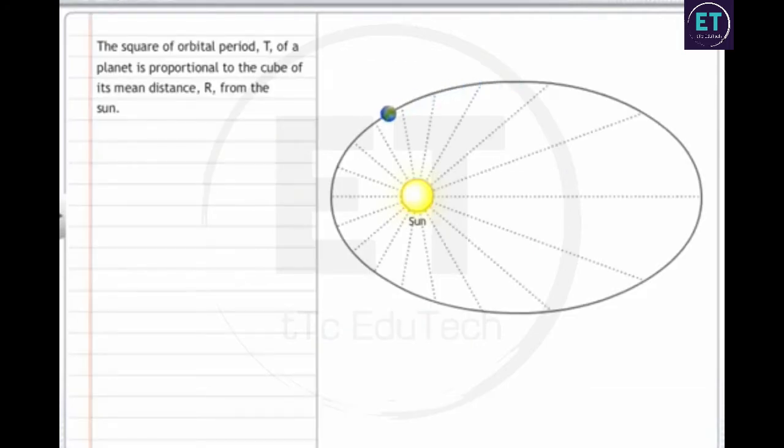The law of periods states that the square of orbital period T of a planet is proportional to the cube of its mean distance r from the sun. Hence, you can express the law of periods as T squared proportional to r cubed.